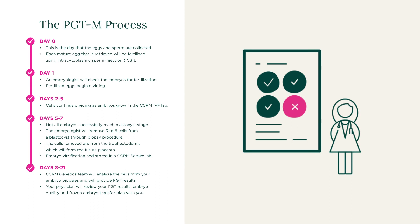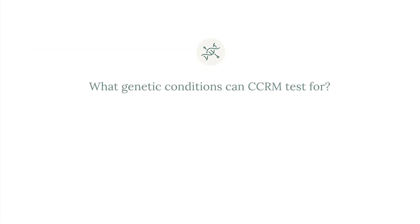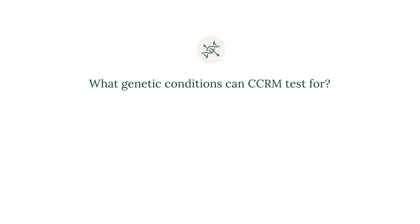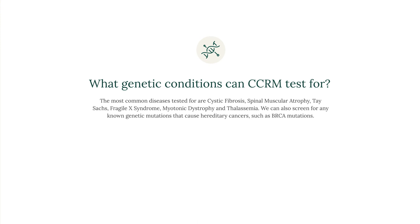Tens of thousands of unaffected children have been born worldwide from PGT-M for hundreds of different inherited single gene disorders. CCRM can screen for any known inherited disorder caused by a mutation in a single gene. The most common diseases tested include cystic fibrosis, spinal muscular atrophy, Tay-Sachs, Fragile X, myotonic dystrophy, and thalassemia. We can also screen for any known family mutations that cause hereditary cancers, such as BRCA mutations and inherited breast cancer.